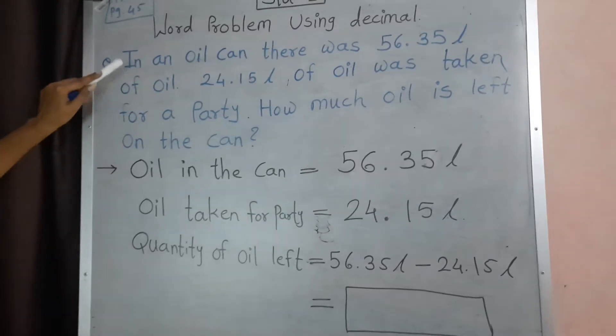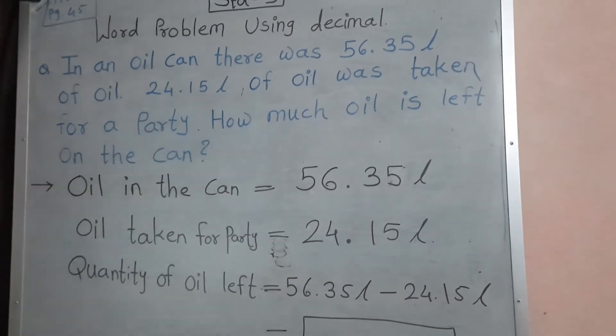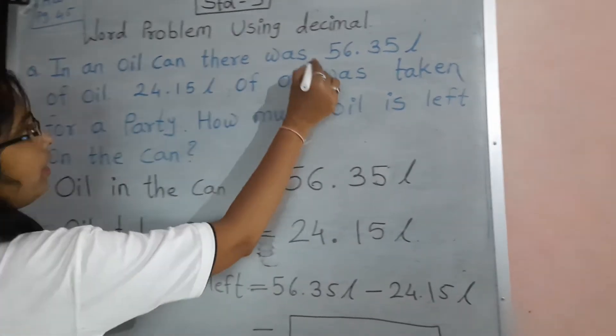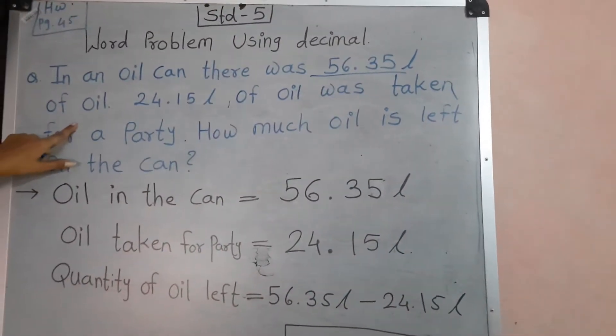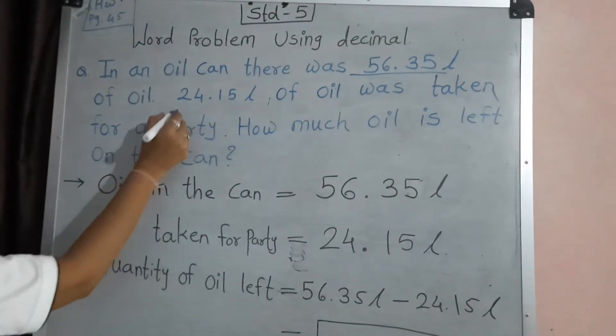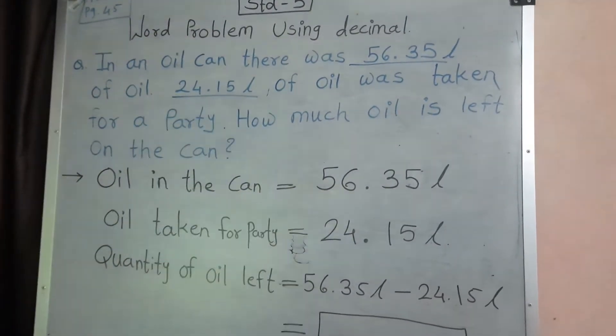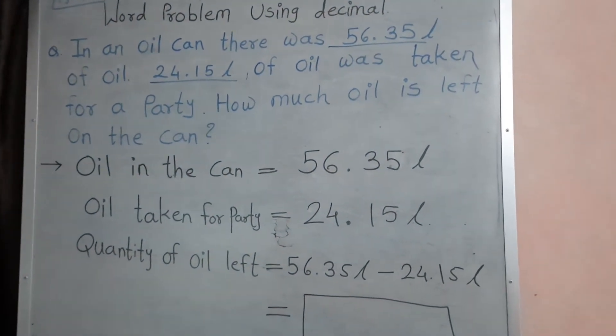Listen again. In an oil can, there was 56.35 litre. Look at here, 56.35 litre of oil. And 24.15 litre of oil was taken for the party. Then how much oil is left in the can?